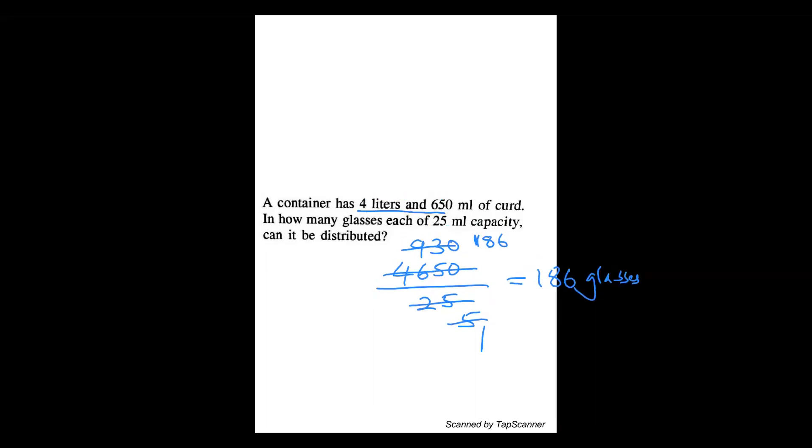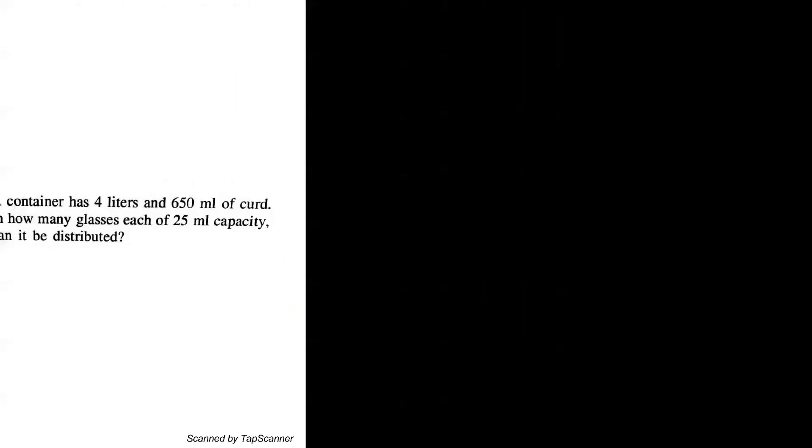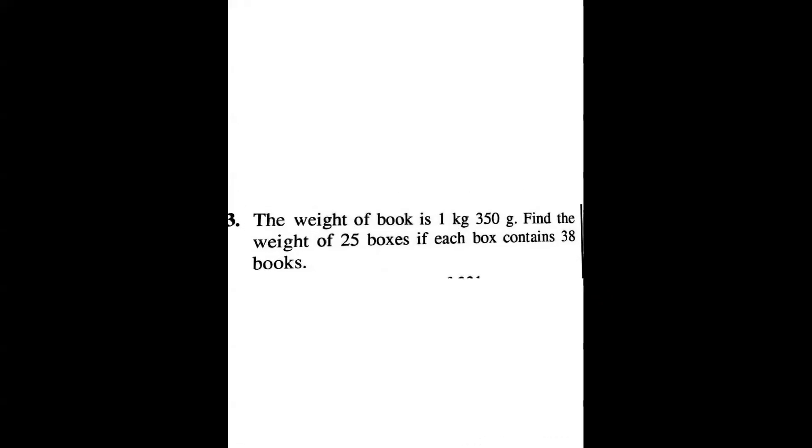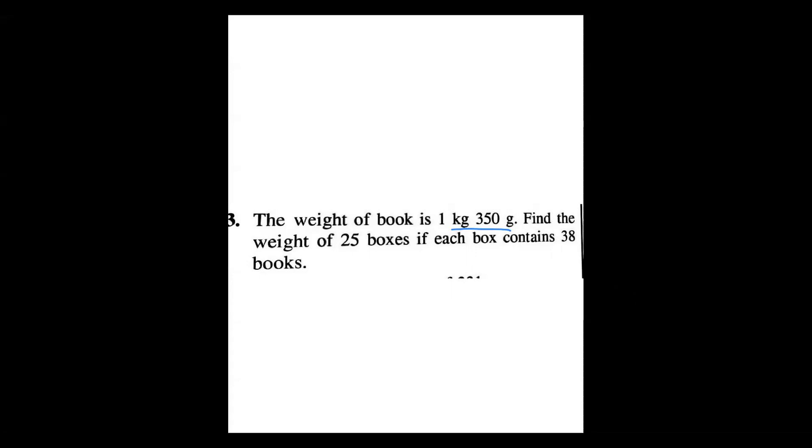Next question. The weight of the book is 1 kg 350 grams. Find the weight of 25 boxes, each box contains 38 books. They are asking 25 boxes, in each box they have 38 books. One book weight is 1 kg 350. We can write this as 1350 grams. First, we will do in grams, after that we can convert into kgs.